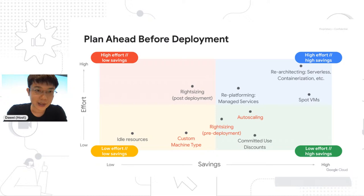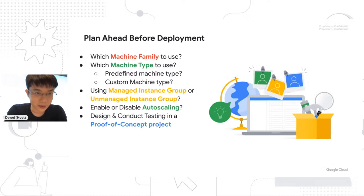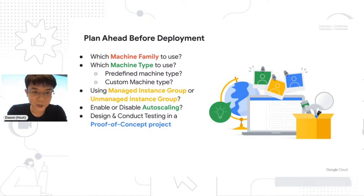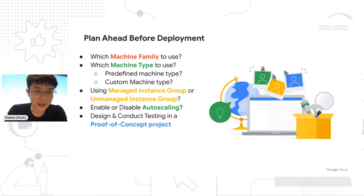You also need to plan ahead before deployment on Compute Engine. Which machine family do you want to use? Which machine type — predefined or custom? Are you going to use a managed or unmanaged instance group? If using managed instance group, are you going to enable autoscaling? Autoscaling is a major factor for effective resource utilization. It's important to integrate proof-of-concept testing before deploying to production, because you need statistics to understand what is best for your workload.